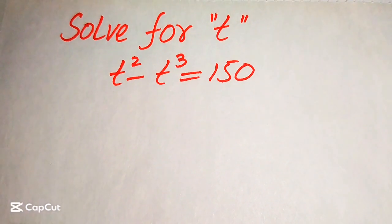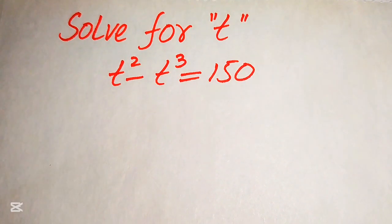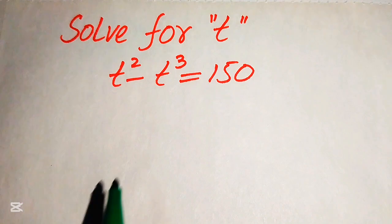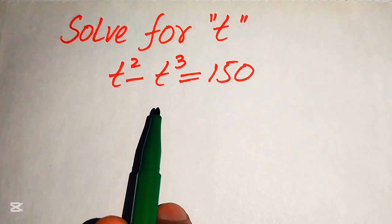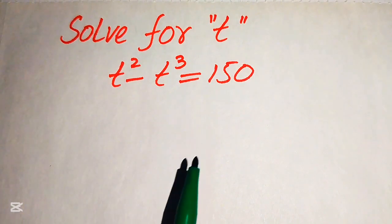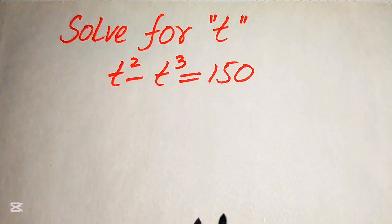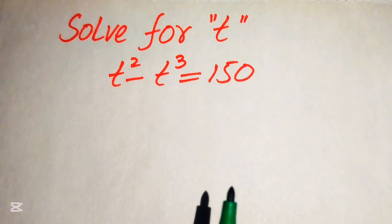Hello everyone, welcome to solve this nice math olympiad algebra problem. Here we have t squared minus t cubed equals 150, and we solve this problem for all the values of t.